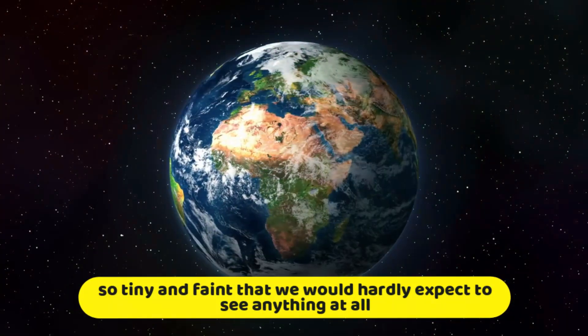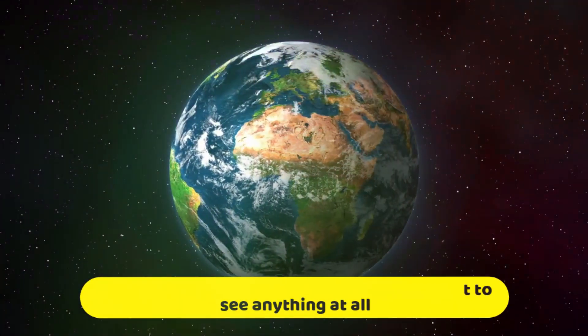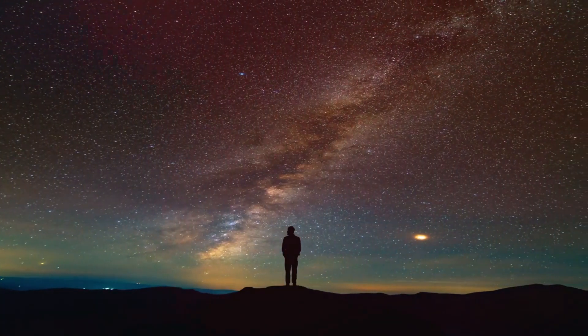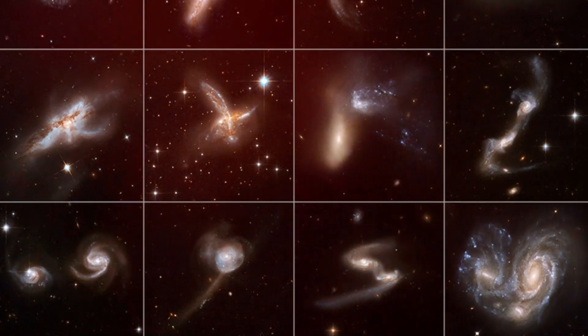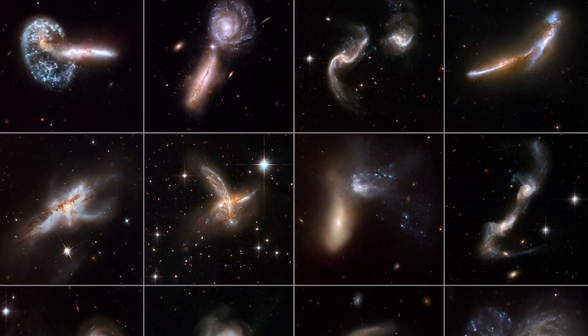The theory predicts only the faintest dwarf galaxies, so tiny and faint that we would hardly expect to see anything at all, at a time when the universe was allegedly in its infancy. Giant galaxies wouldn't form from cosmic mergers until much later.